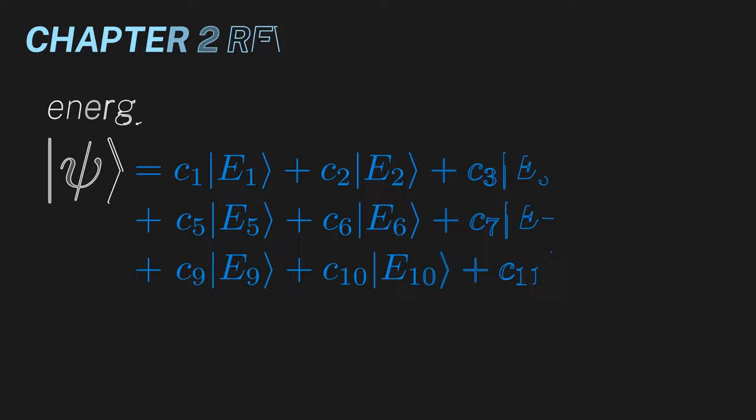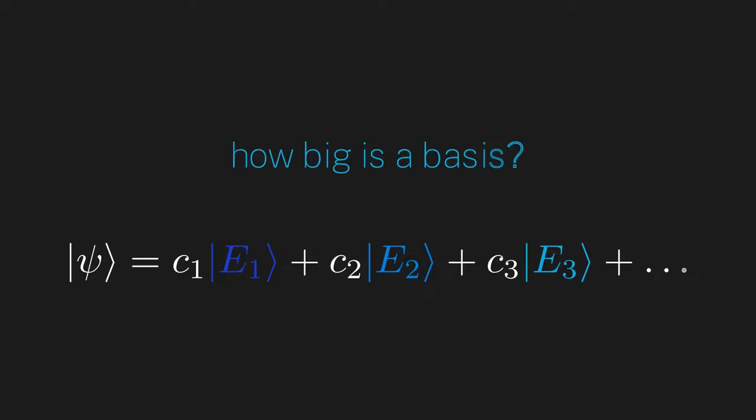Now, I want to ask a simple but very important question. We have a vector space of quantum states, but what is the dimension of this vector space? Remember that the dimension of a vector space is the number of vectors needed to form a basis. So, how big is a basis in this vector space?